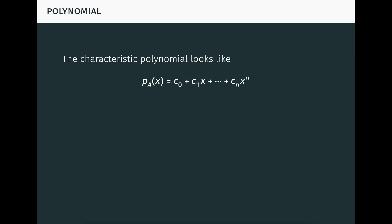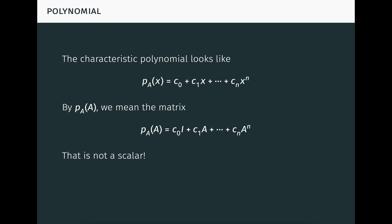More specifically, we know that the characteristic polynomial of A looks like this, where the c's are some coefficients in R. By P_A of A, we mean the matrix seen here, where A has been substituted for x. One thing we know for sure is that ain't a scalar, so we can't compute P_A of A as in the attempted proof.